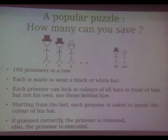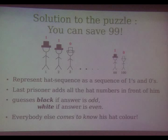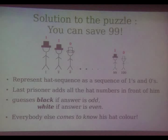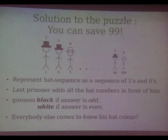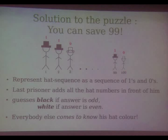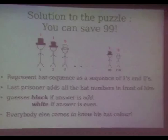This is the solution. You label the hats as 1 and 0 — black is 1 and white is 0. The last prisoner adds up all those numbers in front of him. If the sum is odd, he guesses black; if the sum is even, he guesses white. He has no way of guessing his own color, so that is left to chance. But the best part is that everybody else comes to know their own color, because the last person announces whether the number of black hats in front of him is odd or even. The second person can then deduce his own hat color and so on. This strategy saves 99 for sure — worst case is 99 and best case is 100.